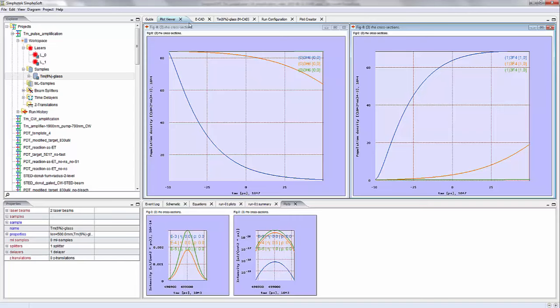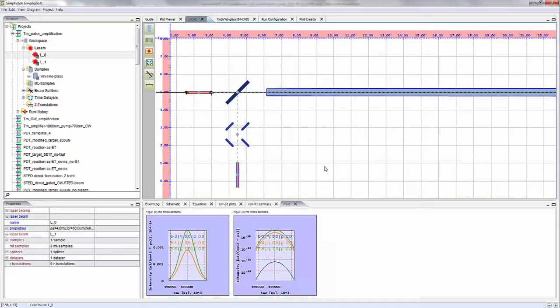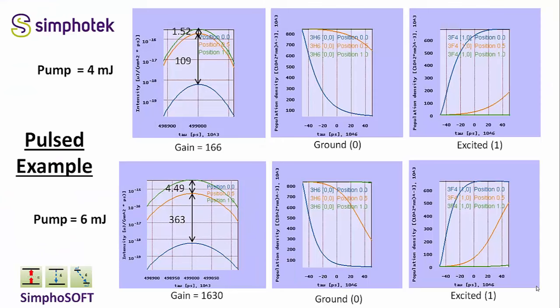This example used a four millijoule pump pulse. I will also show results when changing that to six millijoules. With Symphosoft, you can vary any material or device parameters and see how the changes affect your results. The four millijoule pump gave a total gain of 166. Most of that gain occurred in the first half of the sample — the gain was about 109 between input and halfway point, while the last half of the sample showed a gain of only 1.52.